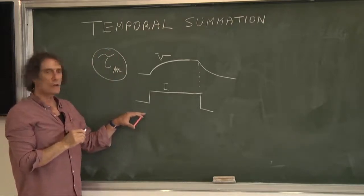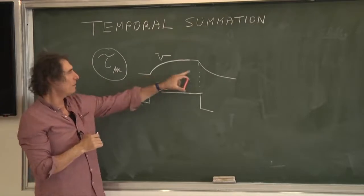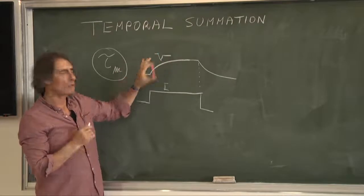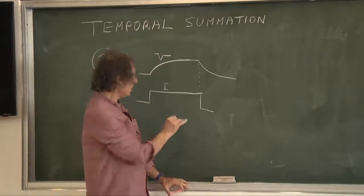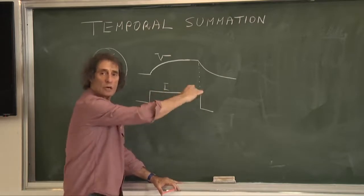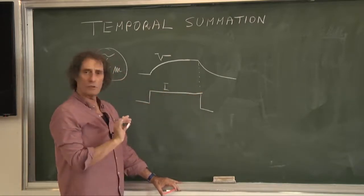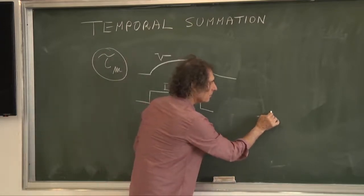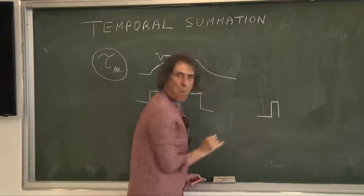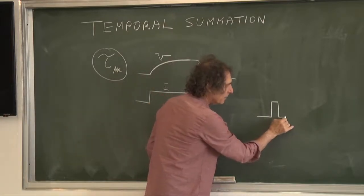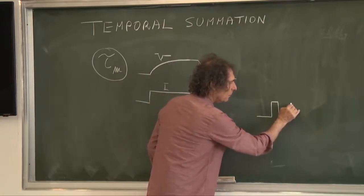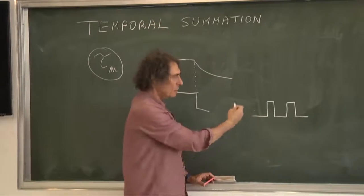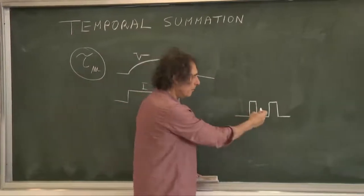Let me show you a very important consequence of the fact that we have a time constant, and this is called temporal summation. Instead of injecting a continuous current, I will now inject intermittent current. I will inject the current I and stop it. Then I will wait a little bit, inject exactly the same current again, and stop it. So this will be a repeated current, but with intermissions.